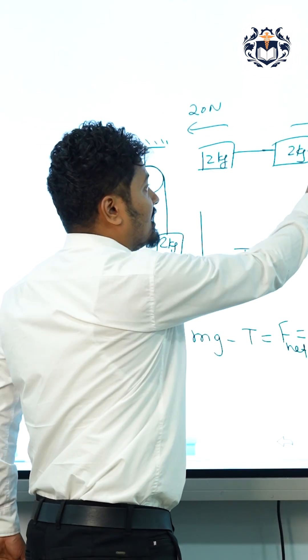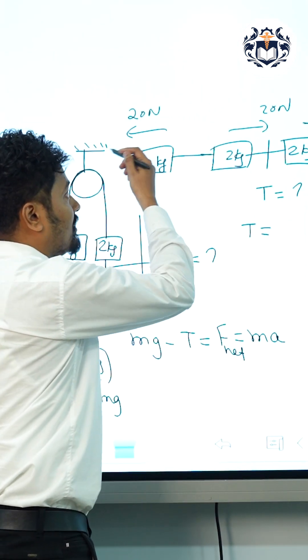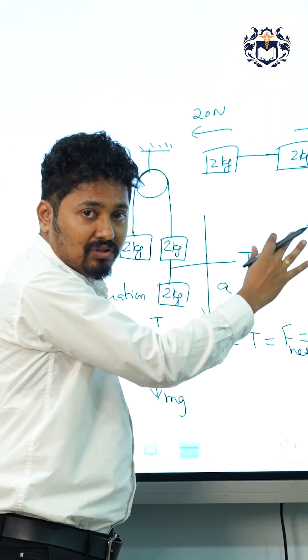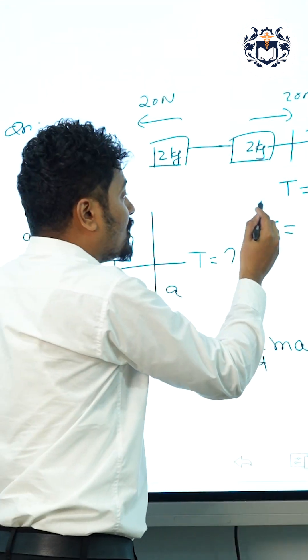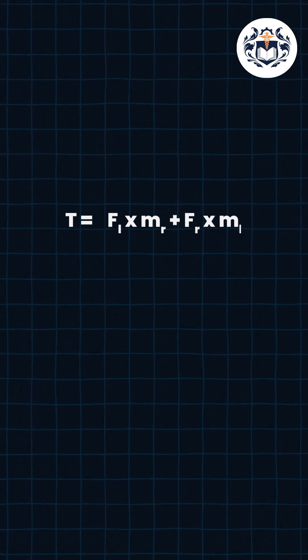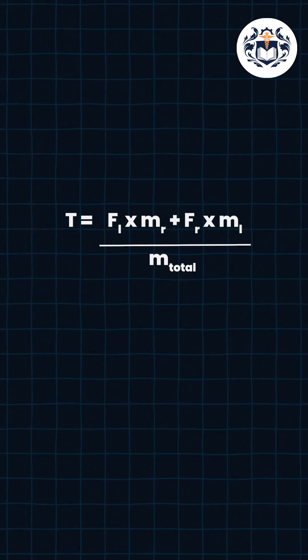But you can use direct formula. Tension in the string is equal to left side force into right side mass plus right side force into left side mass divided by total mass. You are just marking the forces acting on the block and you are able to apply the shortcut formula.